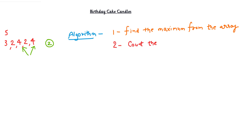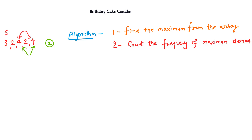The algorithm is as follows. Step one: find the maximum from the array. Step two: count the frequency of the maximum element. We find the maximum element — which is four — and count its occurrences inside the array. We have two occurrences of four, so the answer is two. The algorithm is simple: find the maximum element from the array, then count the number of occurrences of that element.